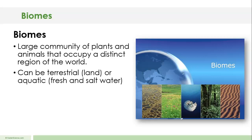A biome can be either a land or terrestrial biome. We can also have aquatic or water biomes, and those water or aquatic biomes could be either freshwater or saltwater biomes. You're not typically going to have a biome that contains both fresh and salt water, so oceans are kind of their own biome.